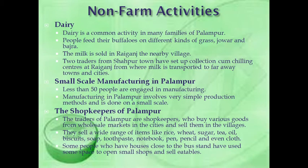Non-farm activities: non-farm means activities other than farming. First is dairy — dairy is a common activity in many families of Palampur. People feed their buffalos on different kinds of grass, chaff and bajra. The milk is sold in Rani Gunj, the nearby village. Two traders from Shahapur town have set up a collection cum chilling centre at Rani Gunj, from where milk is transported to far-away towns and cities.